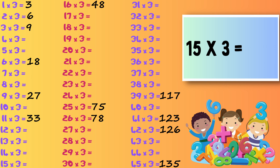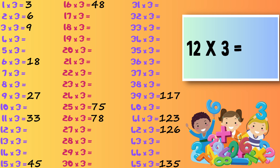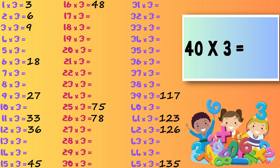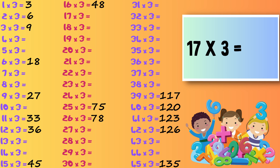Fifteen times three — forty-five. Twelve times three — thirty-six. Forty times three — one hundred and twenty. Seventeen times three — fifty-one.